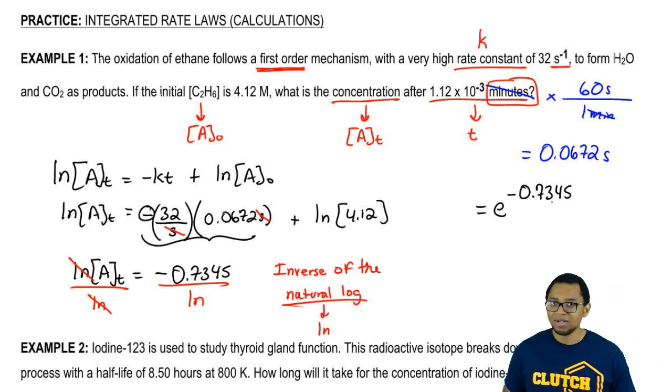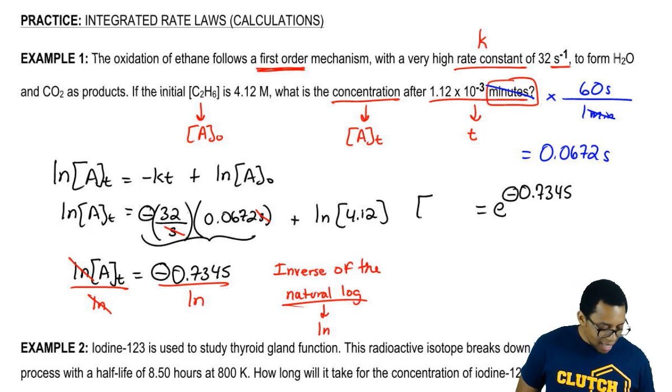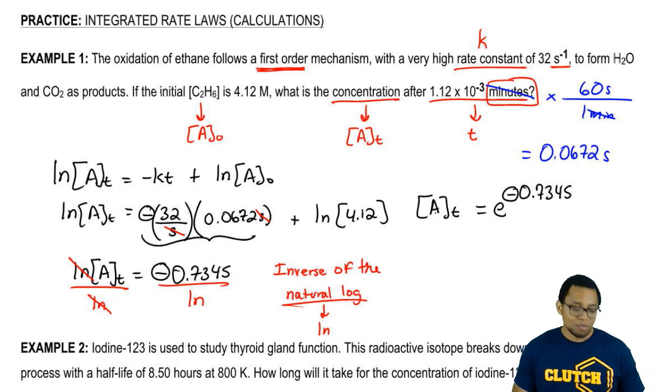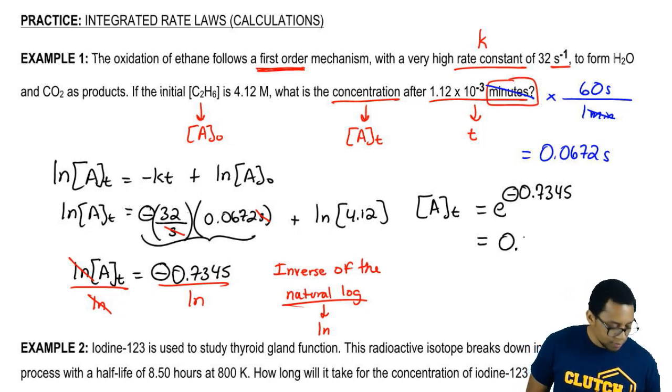So again, when you divide by LN, it becomes E to that number. Does not change the sign at all. Here this was negative, here it's still negative. And we got rid of that LN here for AT, so now AT is by itself. So when you punch that into your calculator, E to the negative 0.7345, you can get for your final concentration 0.4797.